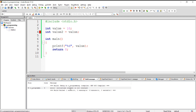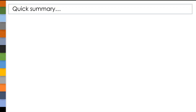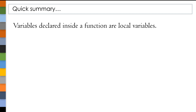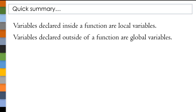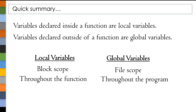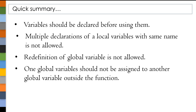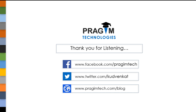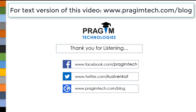These are the few things to keep in mind while using variables. To summarize: variables declared inside a function are local variables, and variables declared outside a function are global variables. Local variables have block scope with a lifetime throughout the function, whereas global variables have file scope with a lifetime throughout the program. These are the key rules to remember. If you like this video, please click the like button and subscribe to our channel. Thank you for listening — see you in the next session!